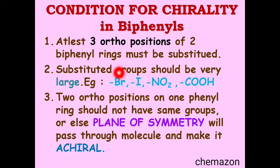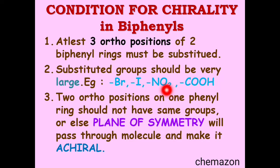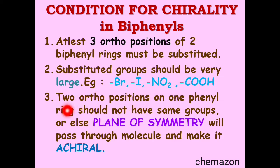Either three or all four of the ortho groups should be substituted. The second condition is that the substituted groups should be very large in size — bromine, iodine, nitro group, or a carboxylic group. The third condition is that the two ortho positions on the same phenyl ring should not have the same groups. If they are the same, a plane of symmetry will pass through the molecule and the overall molecule will become achiral.